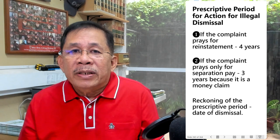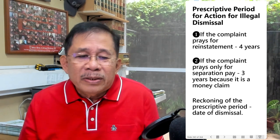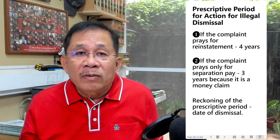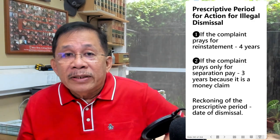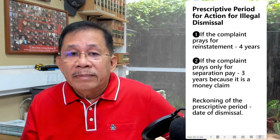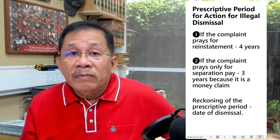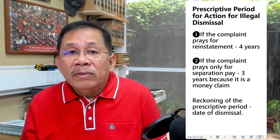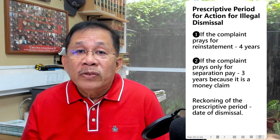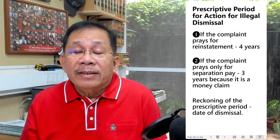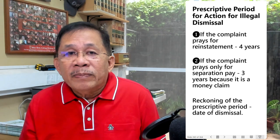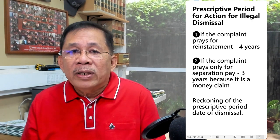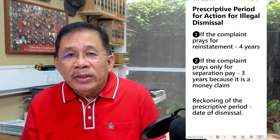The prescriptive period for an action for illegal dismissal depends on the prayer in the complaint. If the complaint prays for reinstatement, the prescriptive period is four years, because the suit is predicated upon an injury to the rights of the plaintiff — so we apply the Civil Code. But if the complaint prays only for separation pay, the action is a money claim which prescribes in three years pursuant to Article 306 of the Labor Code. The prescriptive period is reckoned from the date of dismissal, and not from the date when the employee was acquitted in a criminal case.